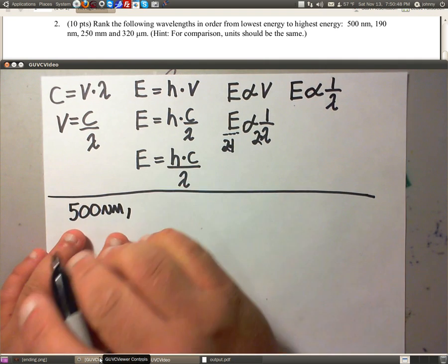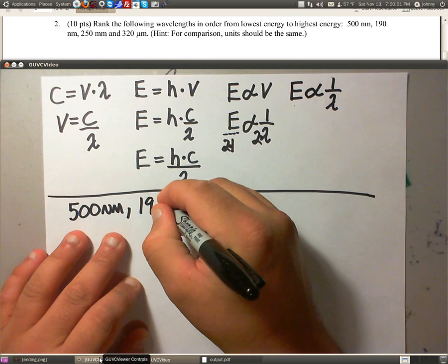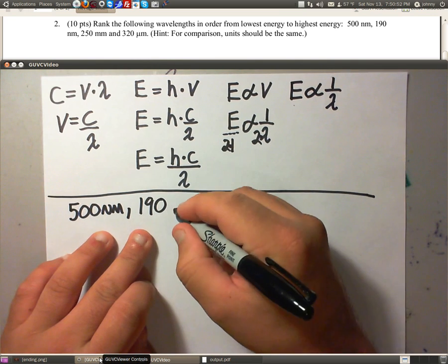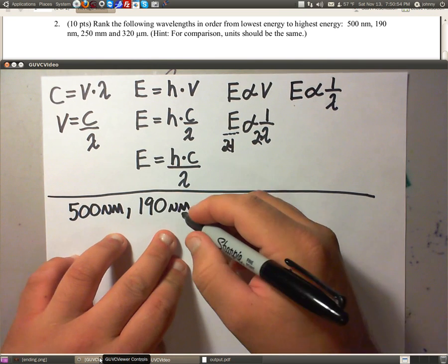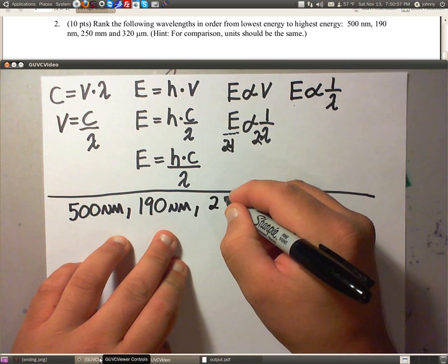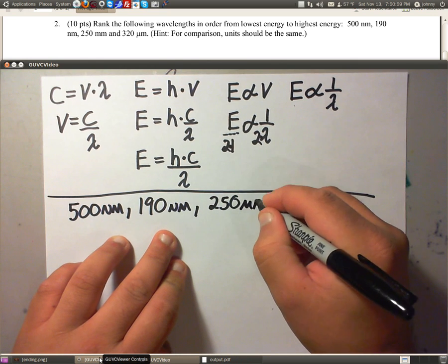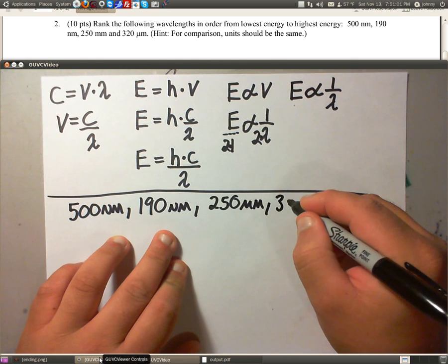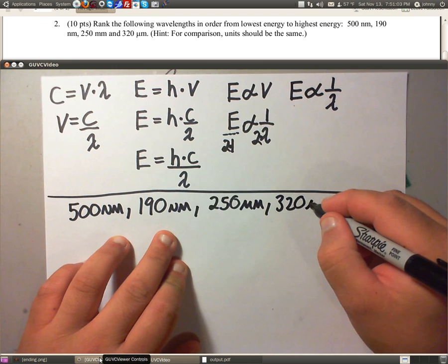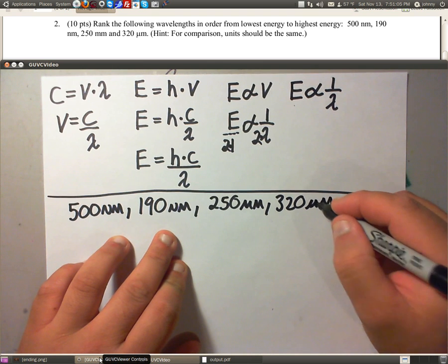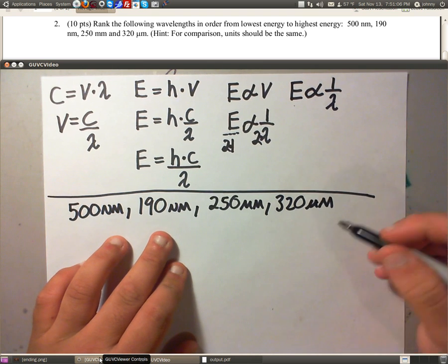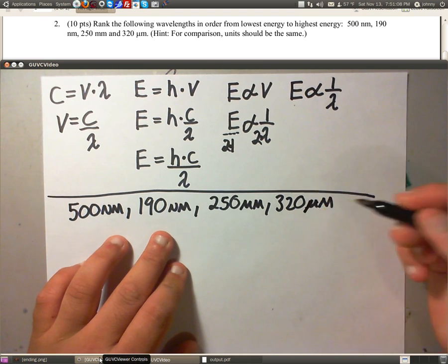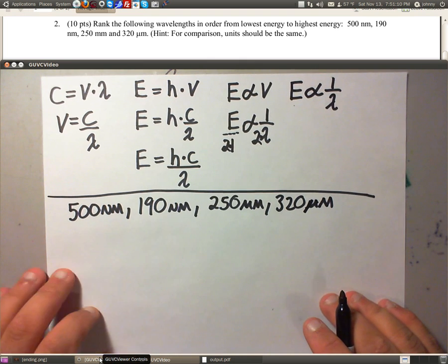We're going to write down 500 nanometers, just like it is, so I can have them on the sheet of paper. 190 nanometers, 250 millimeters, and 320 micrometers. That micro is not the prettiest thing in the world, but anyway, there we go, micro.